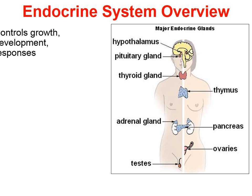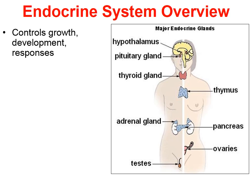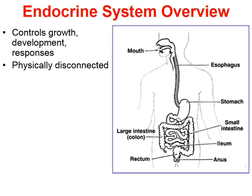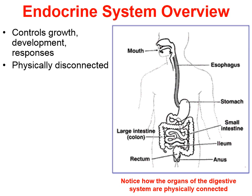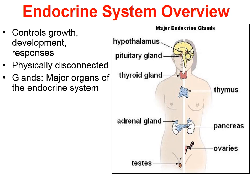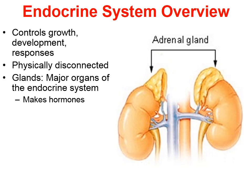The endocrine system helps to control growth, development, and our ability to respond to the environment. One thing you can see from the picture is that the glands or organs are physically disconnected. It's not like the digestive system where organs connect to each other. The glands are the major organs of the endocrine system and they ultimately release hormones.